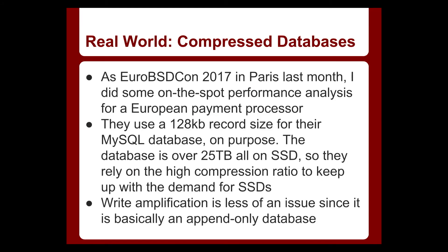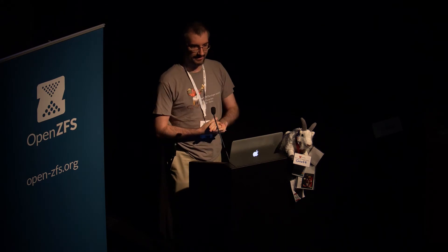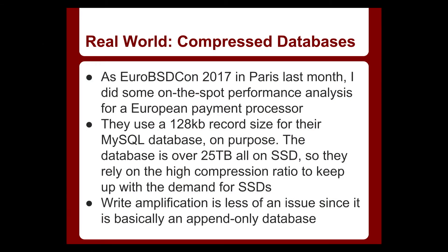A couple weeks ago I was in Paris for EuroBSDCon, talking to one of the vendors there. They run a payment processor in Europe — mostly an append-only database. I was helping them debug some performance problems, and the first thing I noticed is for their MySQL database they were using 128K record size. It turns out they do it on purpose because they get a better compression ratio. They have a 25 terabyte database that has to fit all on SSDs, and since it's mostly append-only they don't get as much write amplification. They're using the larger record size because it got them an extra 0.5 to 1 on the compression ratio. So obviously a stronger compression that would still be fast enough might be quite interesting to them.